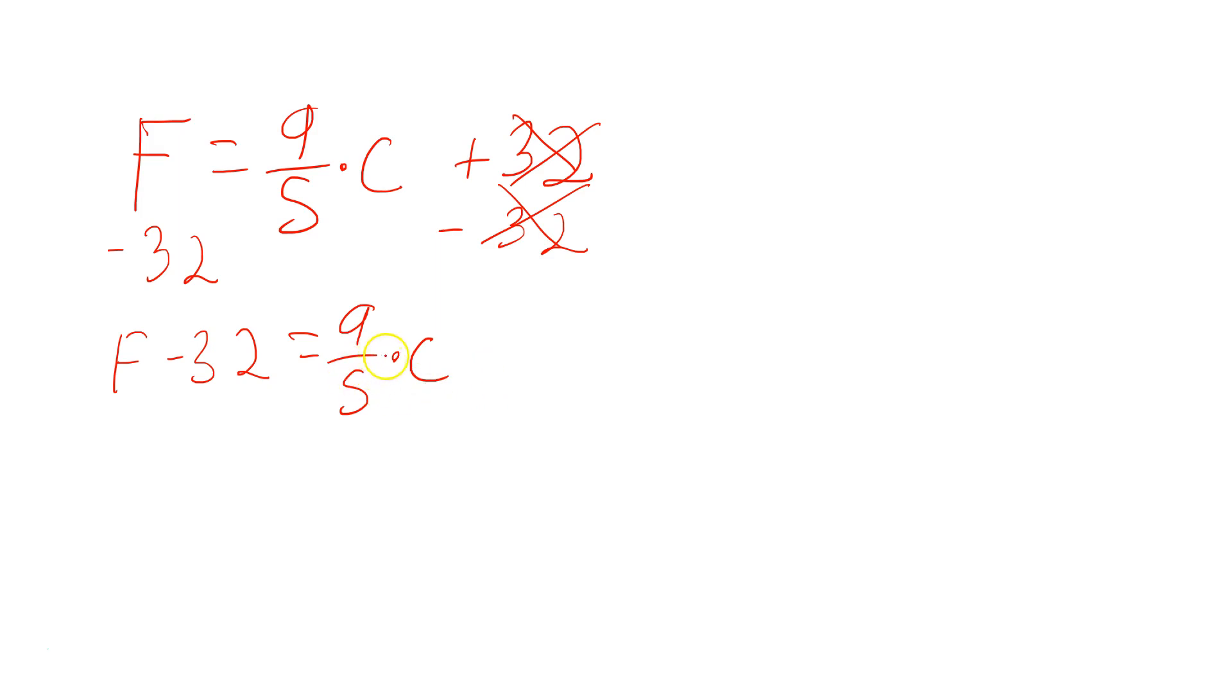At the next stage, you want to get rid of the fraction. To do that, you would multiply by the reciprocal of 9 fifths. I'm going to multiply both sides, always both sides, by 5 ninths on that side, and also on that side, multiply by 5 ninths. When you do this, close F minus 32 within a parenthesis.